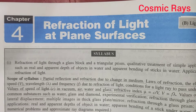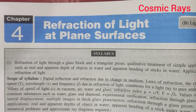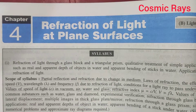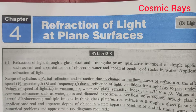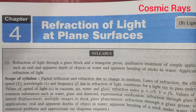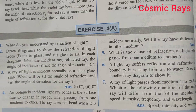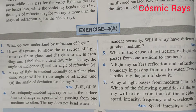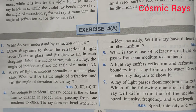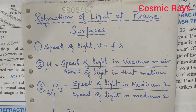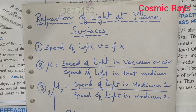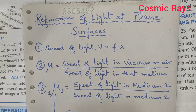Hello friends, it is Avi. We are going to take up the numericals of the fourth chapter of class 10 physics, that is refraction of light at plane surfaces. We will be talking about the numericals of exercise 4a and we will be solving all the four numericals. Before that, let's take a look at the formulas that we are going to use to solve the numericals of this exercise.